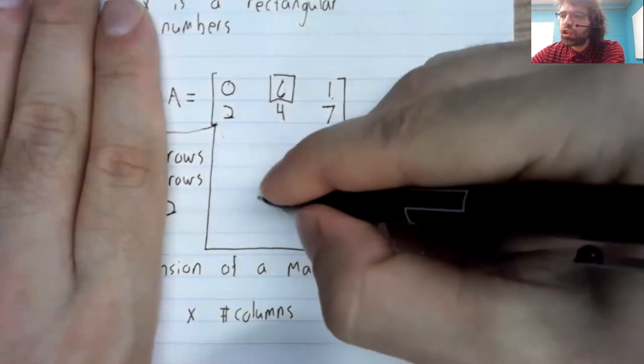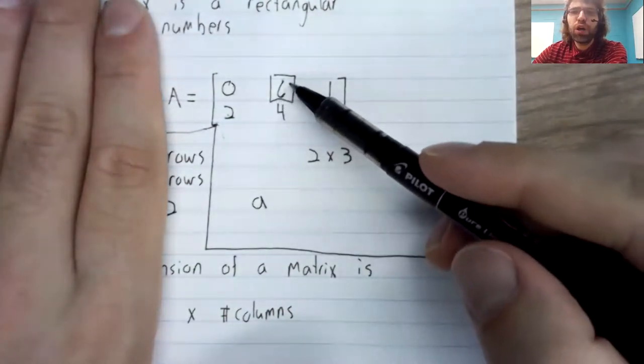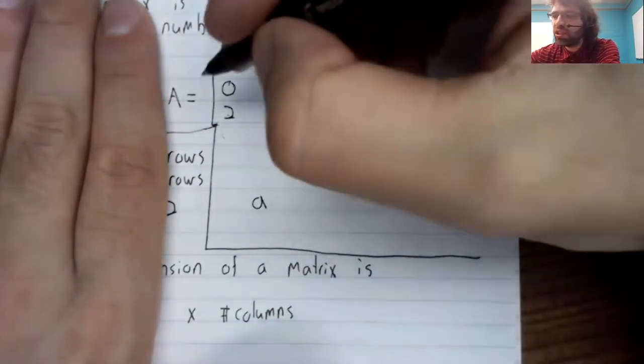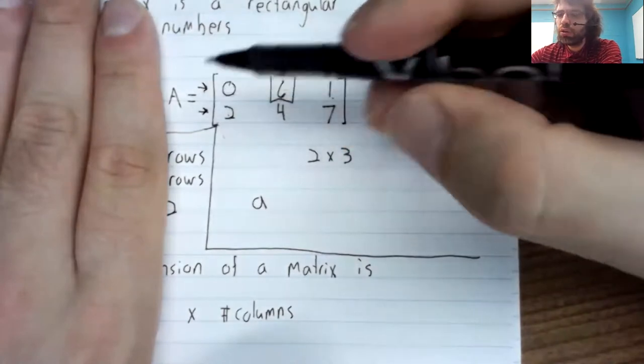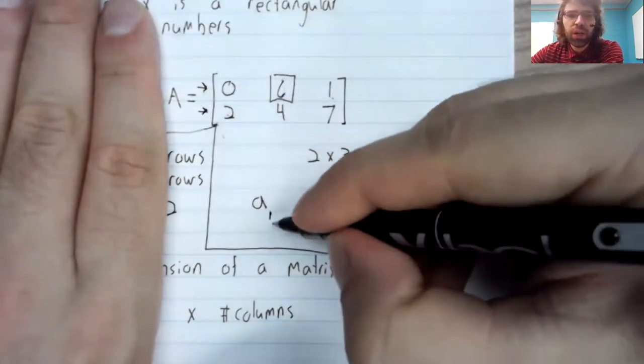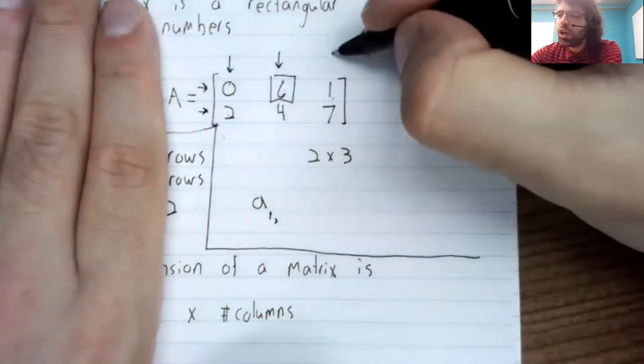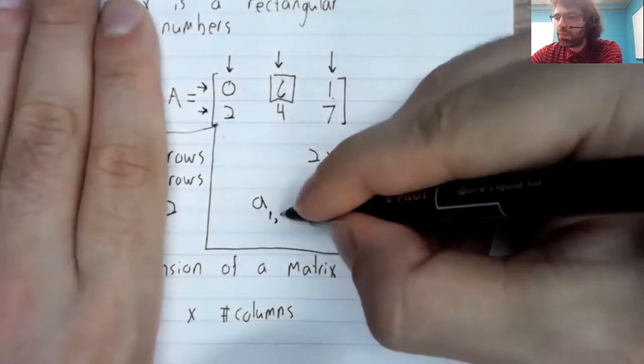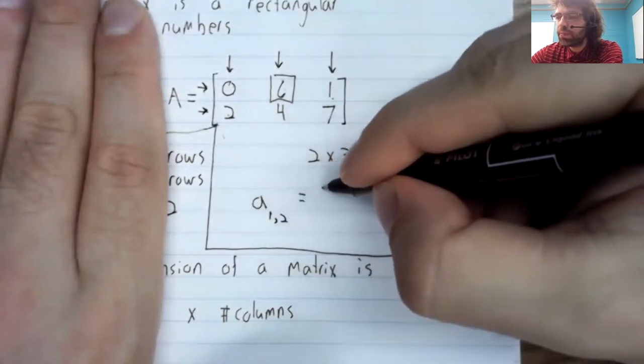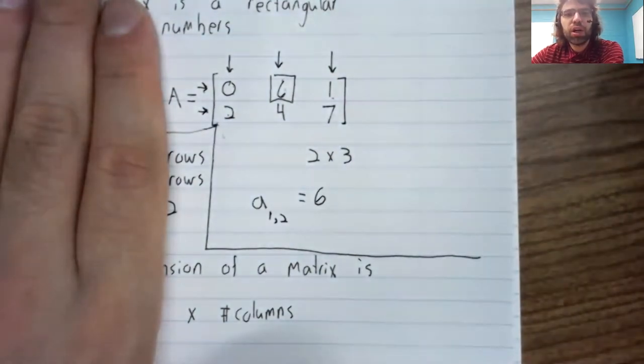If we want to talk about one of these numbers, we switch to lowercase and we ask ourselves what row and column this is in. These are the rows, it's in the first row, and we put a one here, comma. These are the columns and it's in the second column. So a sub one comma two equals six.